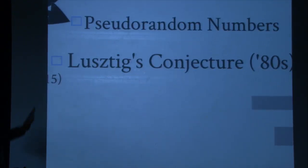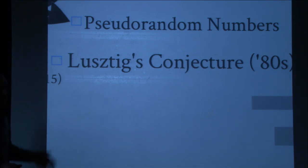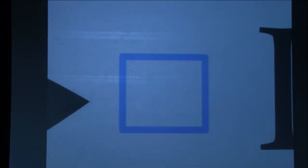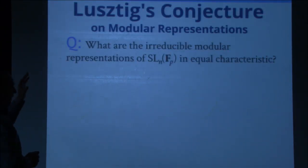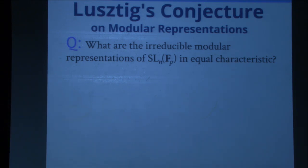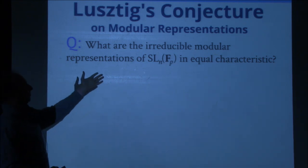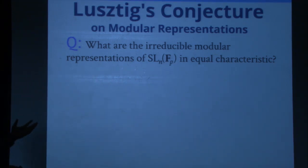Let me tell you about Lusztig's conjecture — I'm going to talk about things I know nothing about. This is the modular Lusztig's conjecture, from the early 80s, late 70s, when people were just starting to realize that maybe you can classify all finite simple groups.